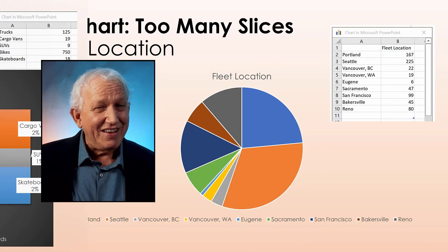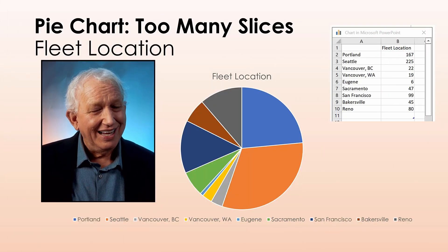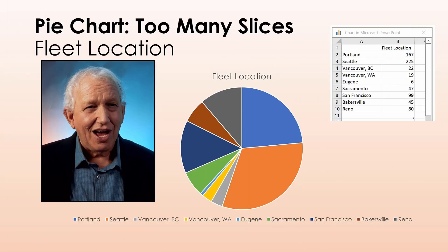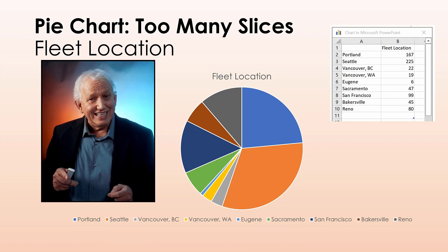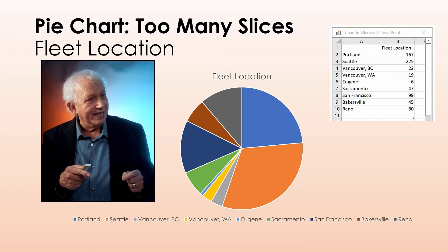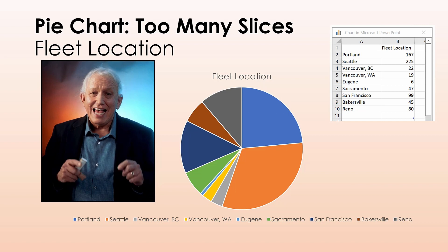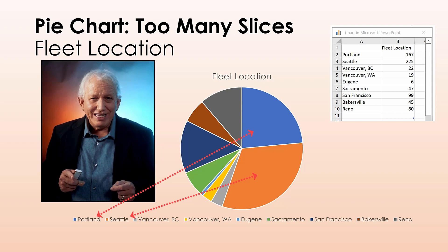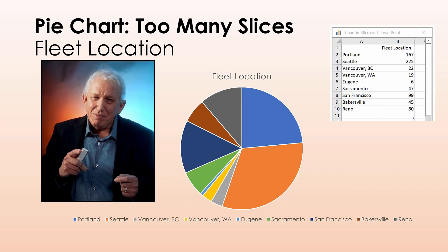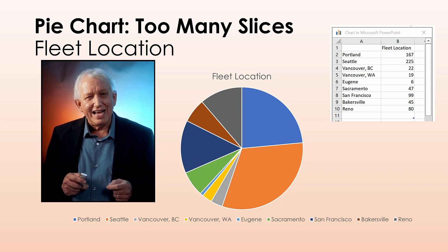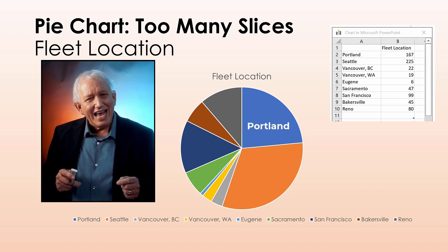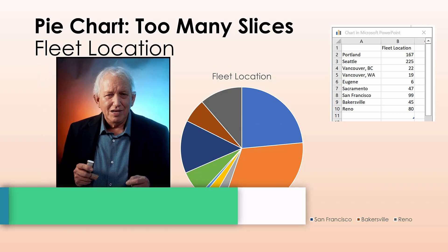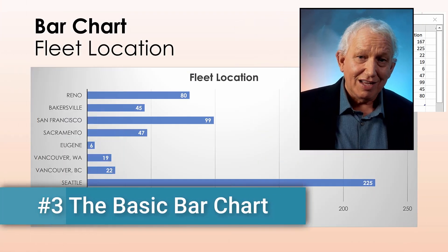Here's a warning: if you have too many items in your pie chart, they can get lost. Nine cities in this pie chart are too many. Our point is that Seattle and Portland are the largest locations for our delivery vehicles, but the way this chart is laid out, it makes it more work for viewers to figure that out. Although adding labels might help, it's better to use a bar chart.